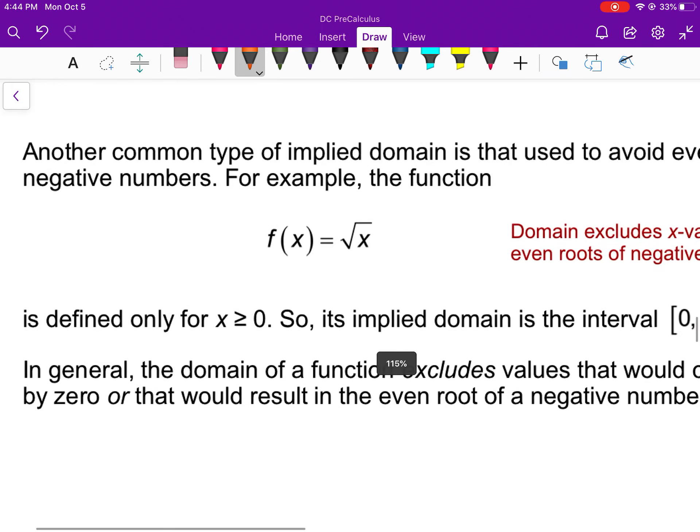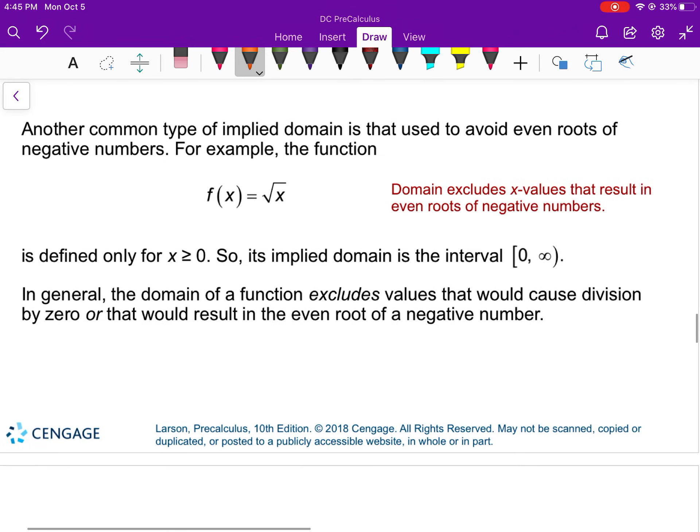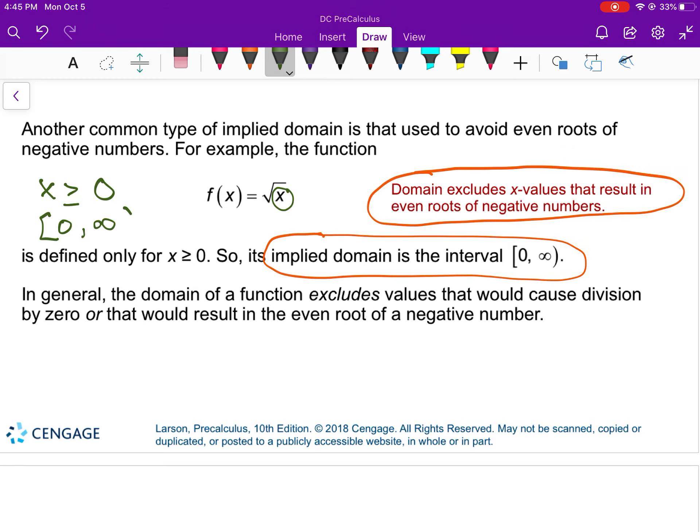When we look at this next problem with the square root of x, the domain excludes x values that result in even roots of negative numbers. So it's got an implied domain of 0 to infinity, including 0. Before, we took what's underneath here and we set it greater than or equal to 0, which is this right here.